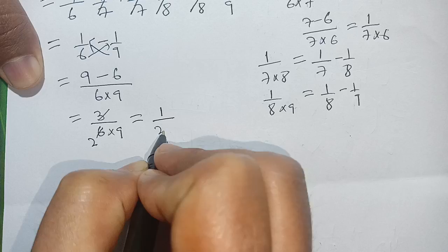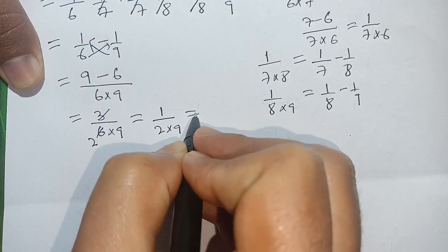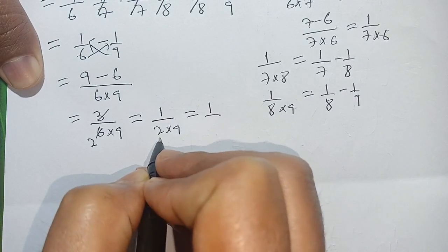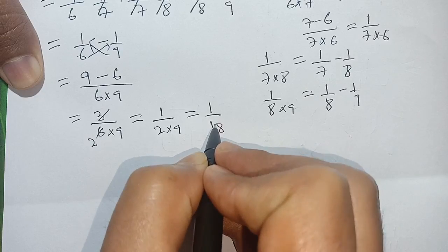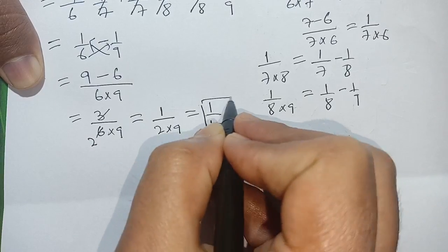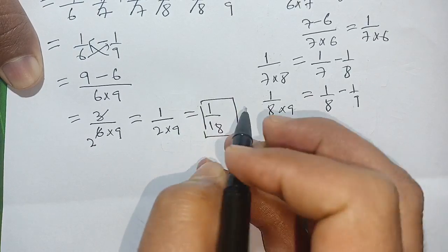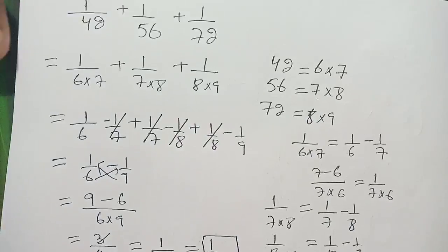The remaining term is 1 divided by 2 times 9, thus it is equal to 1 divided by 18, which is our required value of this sum.